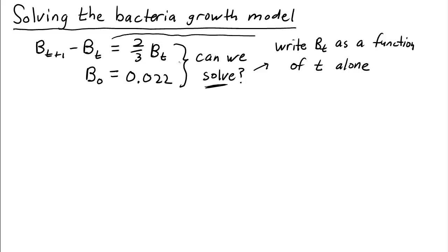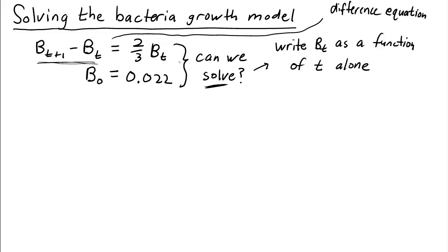This form of the dynamical system can be called a difference equation. It's a difference equation because it's written in the form of this temporal difference — this change in b. A difference equation is nice for developing a model because we like to think about how a population evolves in terms of its change.